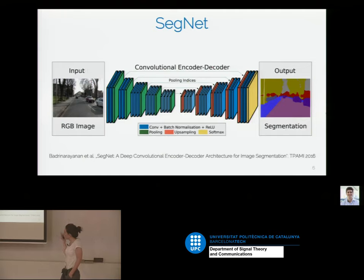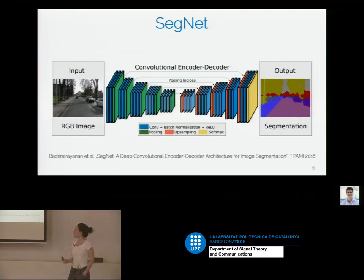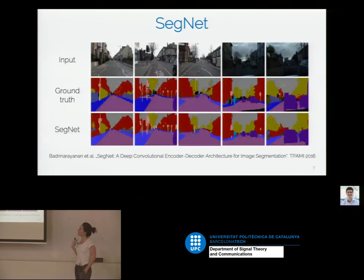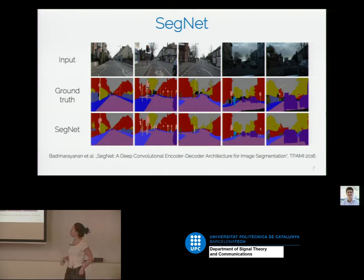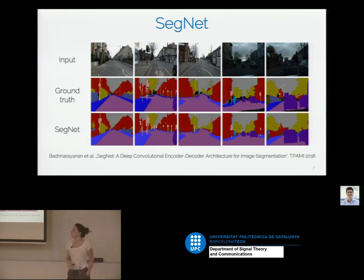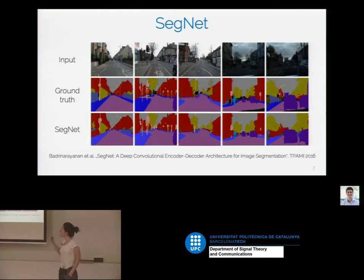One of the first successful applications of autoencoders was SegNet — the network that goes from an RGB image to a semantic segmentation output. This gets pretty nice results. For a variety of inputs, usually in outdoor autonomous driving scenarios, we can get quite accurate predictions. In a couple of lectures, I will present how to compute confidence maps on these predictions, which is also interesting for autonomous driving. For now we assume we get these pixel-wise predictions and we trust them to be correct.